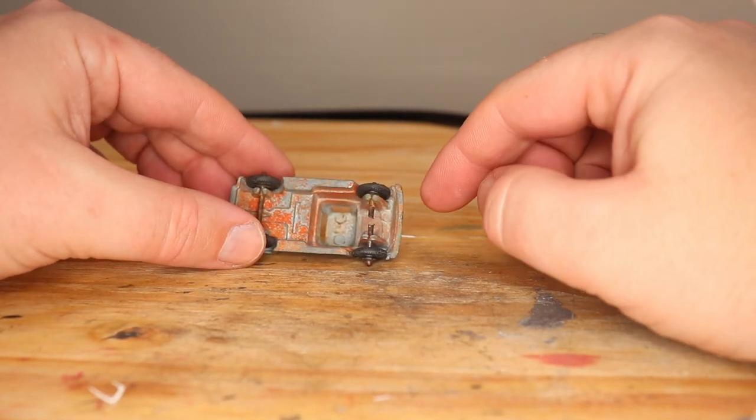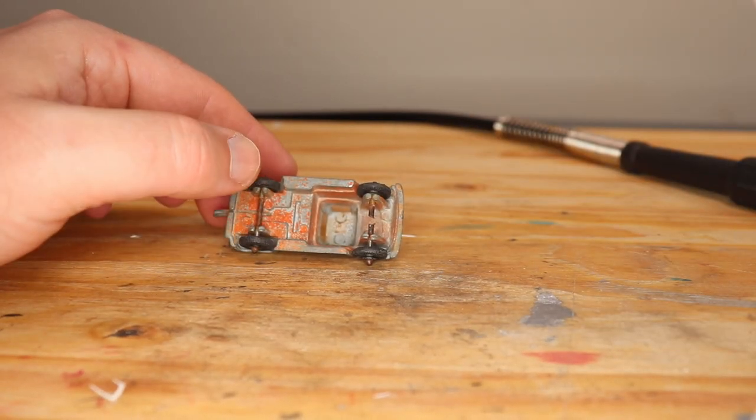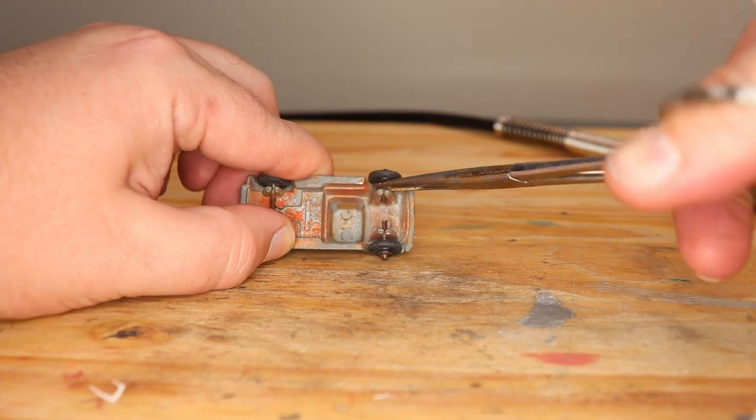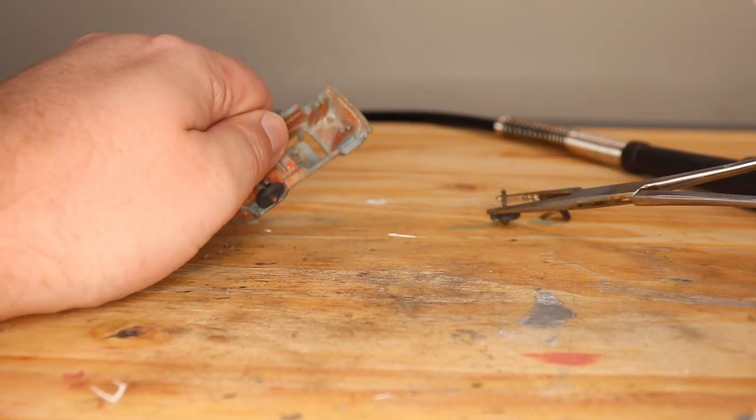Now, I've learned from experience that that axle is going to be hot, so I don't want to touch it. We can pull it out this way. There you go. There's one, and there's our bad one.